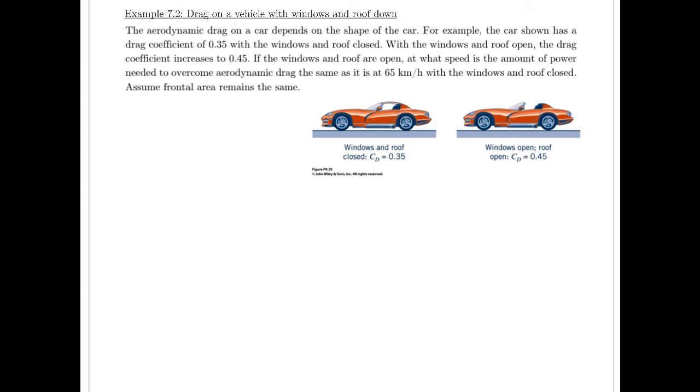If the windows and roof are open, it's asking us at what speed is the amount of power needed to overcome the dynamic drag the same as it is at 65 kilometers per hour when the windows and roof were closed. So what this question is getting at is when there's more drag you need more power to move the car faster. If you're gonna apply the exact same amount of power, so if you're gonna burn the exact same amount of gas as the closed off vehicle at 65 kilometers per hour, how fast is that second vehicle gonna be able to travel using the exact same amount of power.